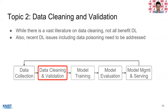Topic two is data cleaning and validation. While there is a vast literature on data cleaning, not all techniques directly benefit deep learning accuracy. There are also recent deep learning issues including data poisoning, which has the intention of reducing model accuracy. There is research called data sanitization whose goal is to defend against such attacks — it's similar to data cleaning but has this defensive aspect, and it has not been well studied in the data management community until now.